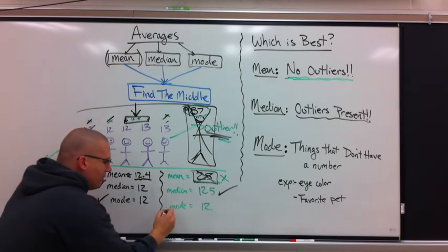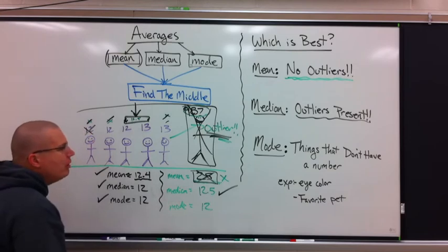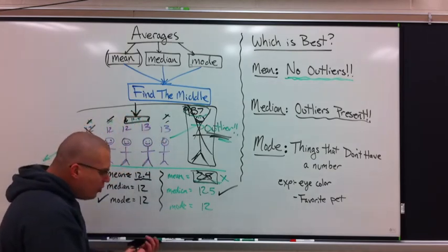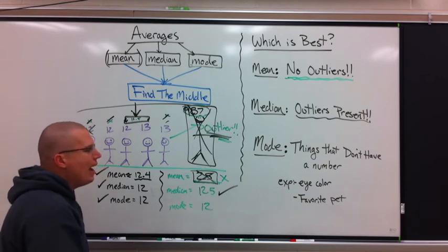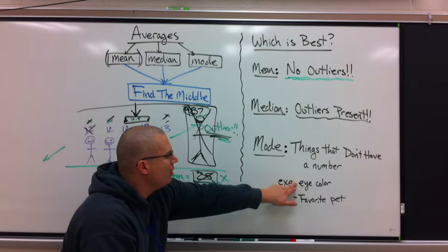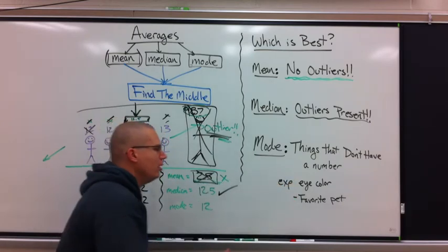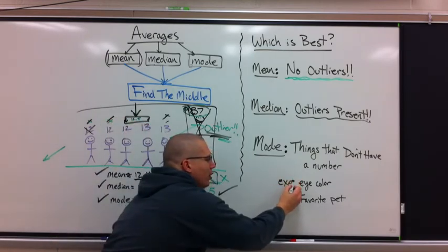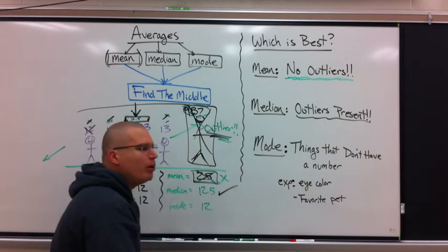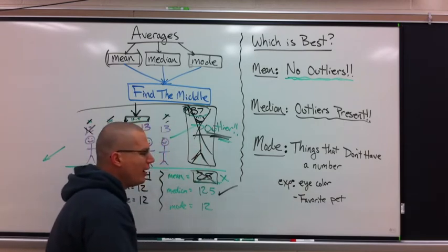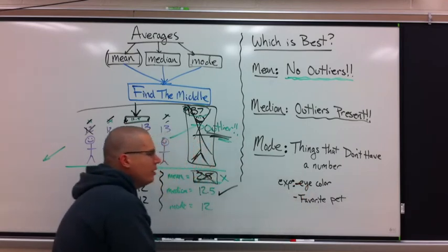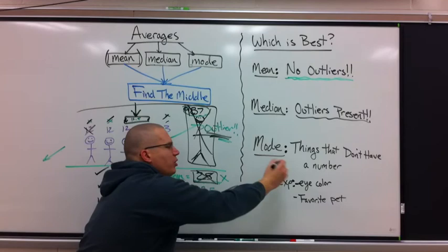Now in this case, did the mode change at all? No. The mode is a little different. The mode is usually used when things don't have a number. So if I would say, what's the average eye color in here? There's no number for that. 4.2 is the average eye color. Really? No, blue or brown would be the average eye color. What's your favorite pet? Dogs. Cats. It's things like that. That's what mode is really good for.